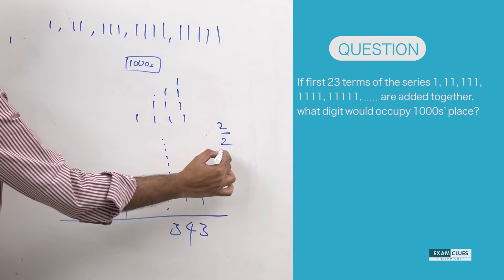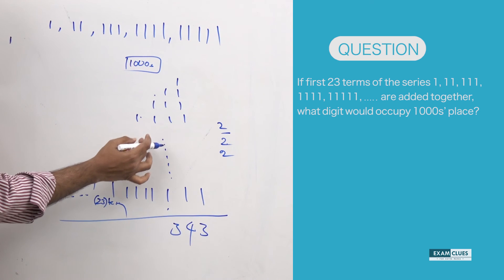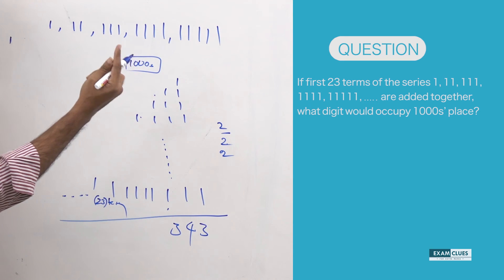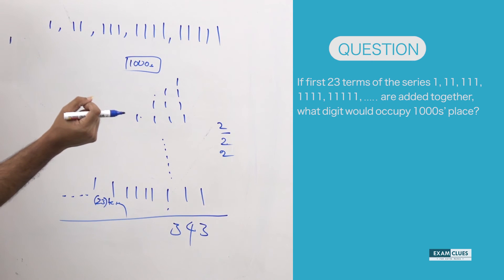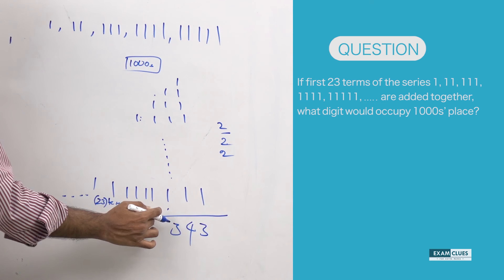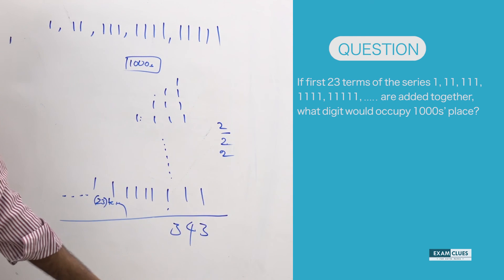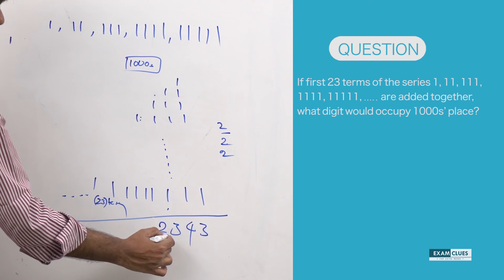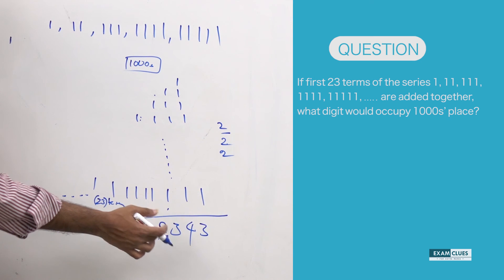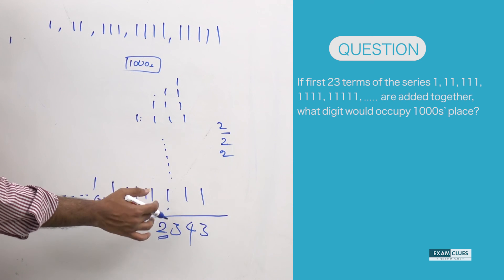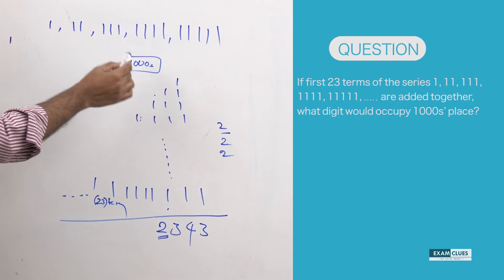Each column decreases by one as we move left. Next we have 20 ones, and with the carry of 2: 20 + 2 = 22 — so the digit in the thousands place is 2. The digit in the thousands place is nothing but 2.